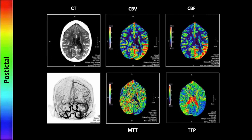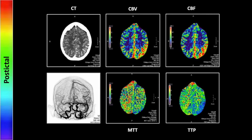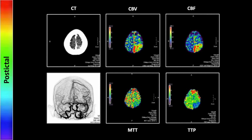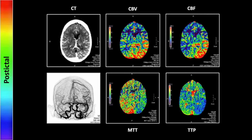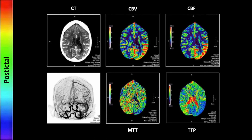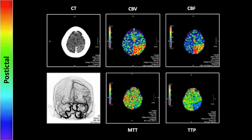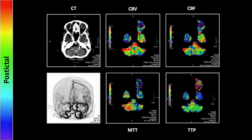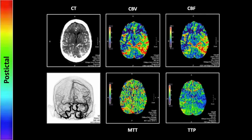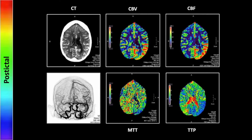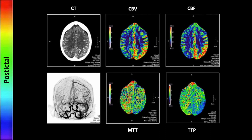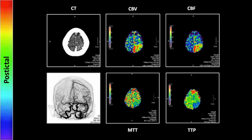Here are the cine images — again, prominent vessels with increased blood volume and blood flow in the region, then altered TTP and MTT, all of these things moving in the opposite direction one would expect for an infarct. So that is a case of a recent seizure with post-ictal perfusion changes.